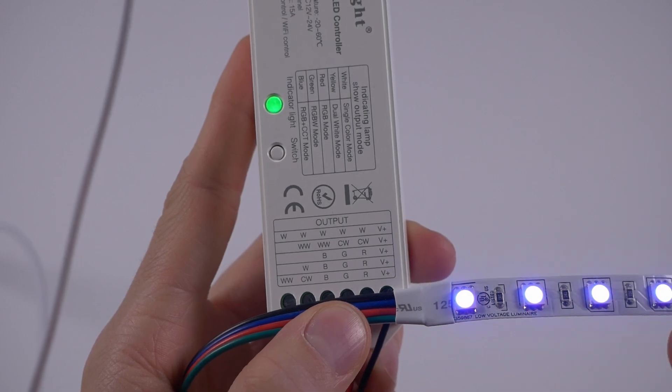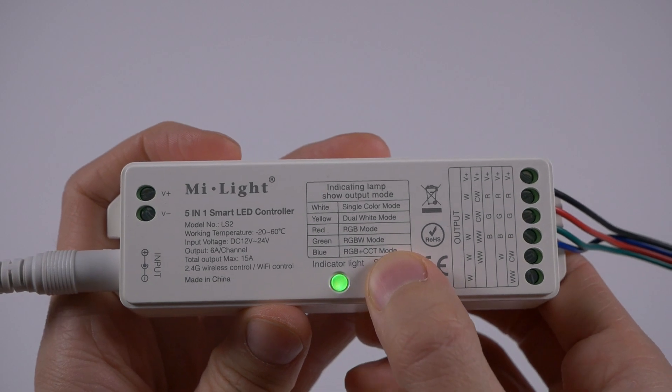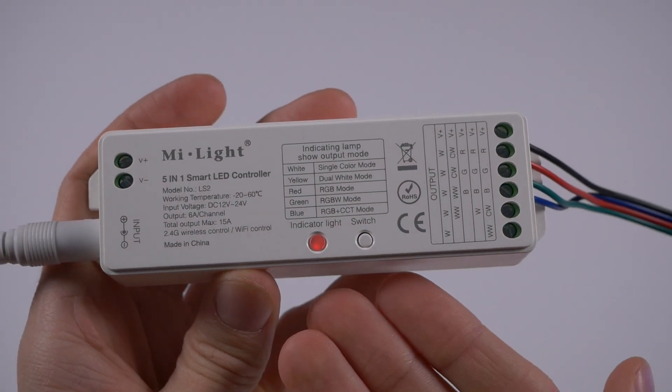For example, when using RGB strip, wire it up according to the diagram for RGB, then press the button several times until the indicator LED turns red.